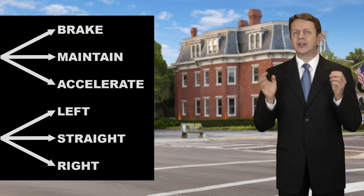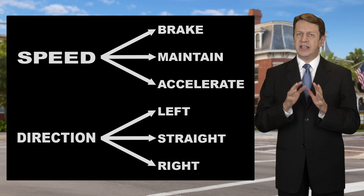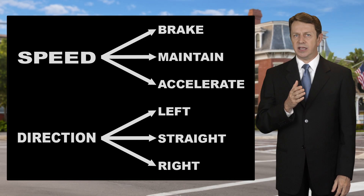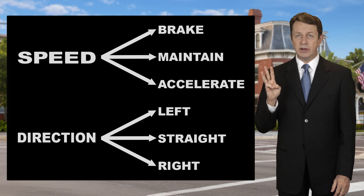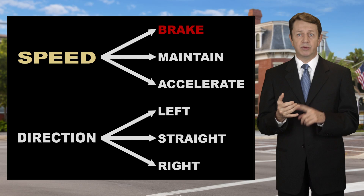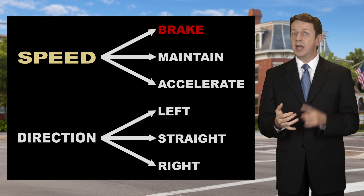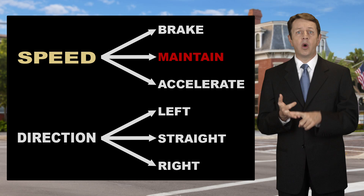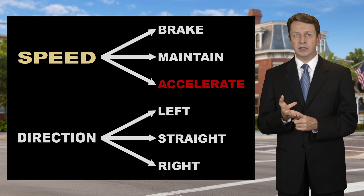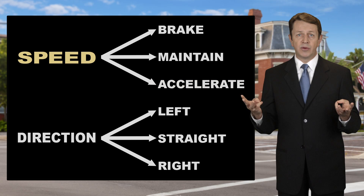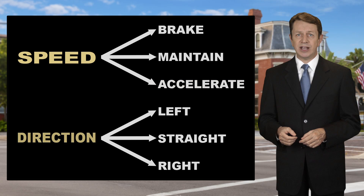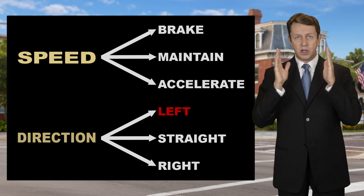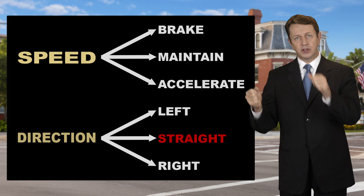There are essentially nine evasive actions that James can take. Three with speed: brake to reduce speed, maintain speed, or accelerate. And James has three choices with direction: turn left, go straight, or turn right.